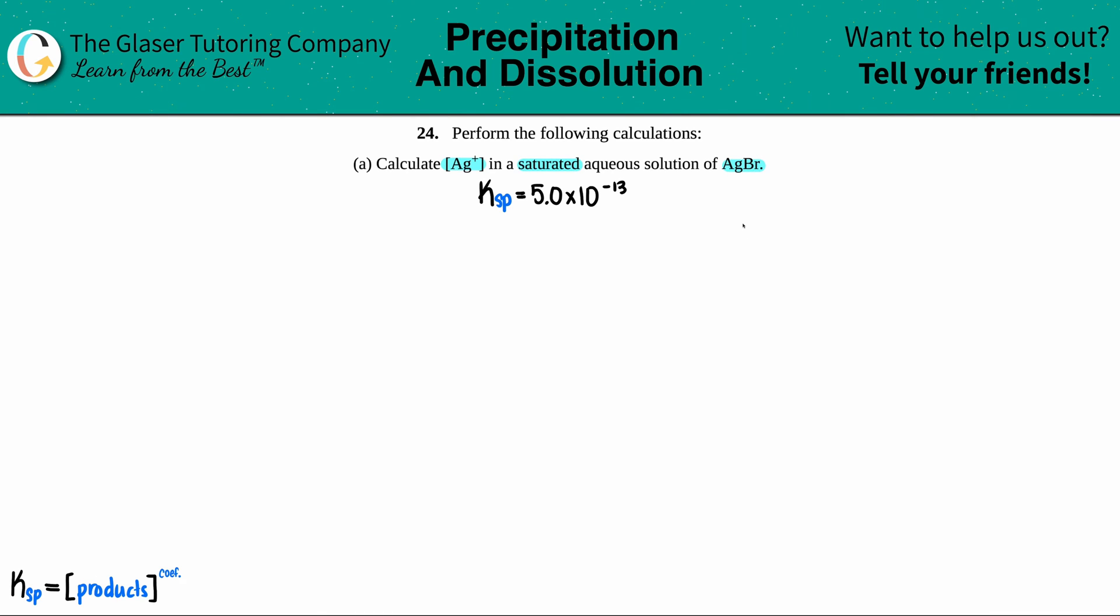So we're talking about saturation. This is for solubilities. A saturated aqueous solution is basically telling you what's the minimum amount that is going to dissolve from this solid compound.